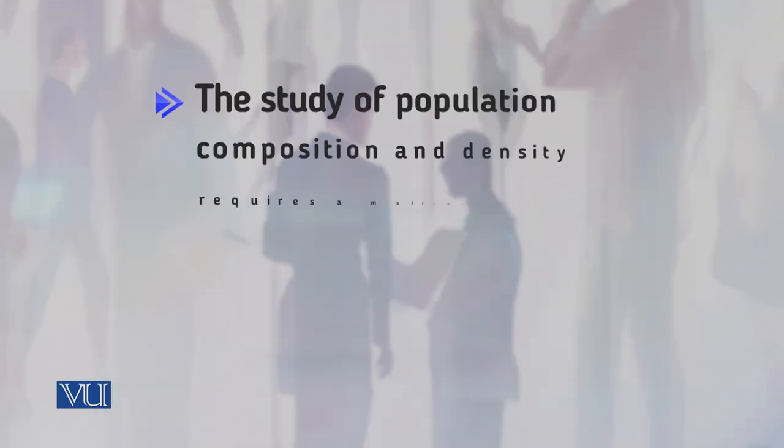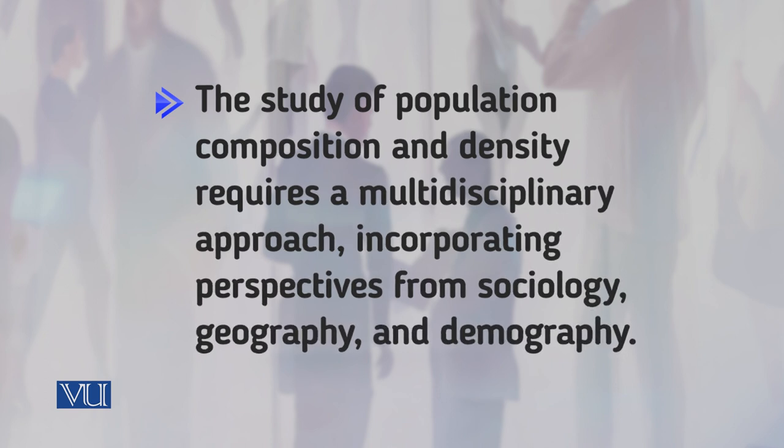ہماری جو public services ہم نے provide کرنی ہوتی ہیں اور government جو policies بناتی ہے، ان سب کا دارومدار population کے characteristics کے اوپر ہوتا ہے. مثال کے طور پر اگر کسی خاص علاقے میں young population زیادہ ہے تو وہاں number of schools بھی اسی حساب سے required ہوں گے. اگر productive population زیادہ ہے تو housing infrastructure اسی حساب سے چاہیے، اور اگر بوڑے لوگوں کی تعداد زیادہ ہے تو number of hospitals اور old age homes اسی کے مطابق بنانے پڑیں گے. The study of population composition and density requires a multi-disciplinary approach incorporating perspectives from sociology, geography and demography.